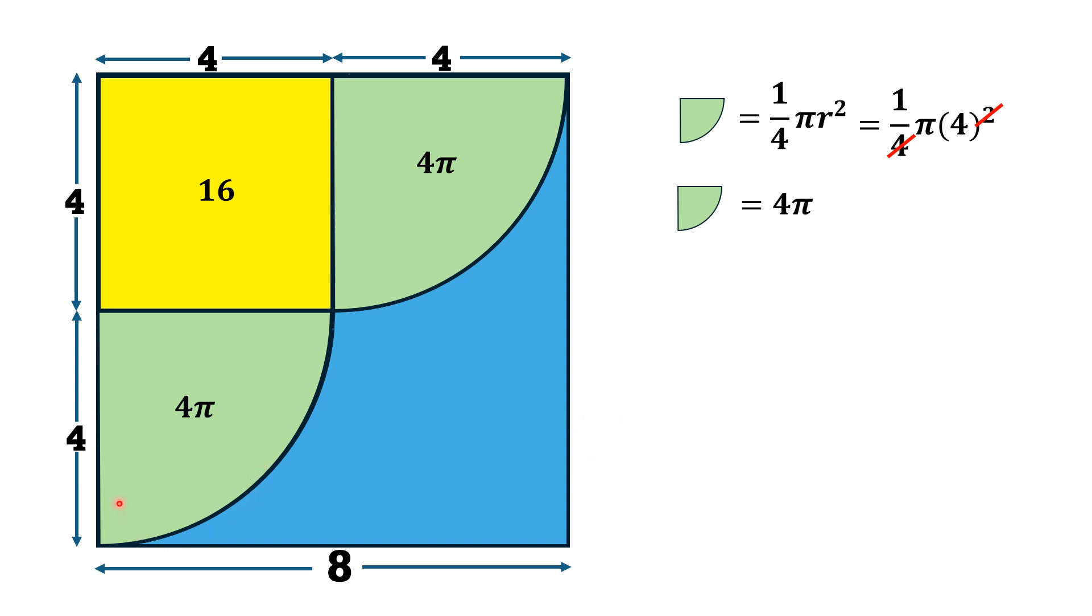Now, if we find the area of this large square having side length equal to 8 units, then definitely its area is 64 square units.